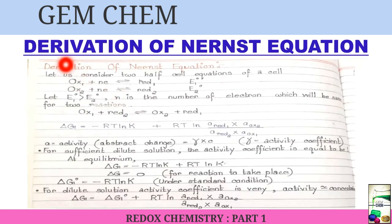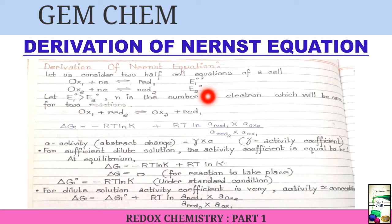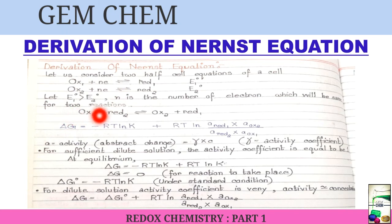Now we go to the derivation of the Nernst equation, which is the basic equation of electrochemistry and redox reactions. We consider two half cell reactions: Ox₁ + ne⁻ → Red₁ with standard reduction potential E°₁, and Ox₂ + ne⁻ → Red₂ with standard reduction potential E°₂. We assume E°₁ > E°₂, and n is the number of electrons, which is the same for both reactions.